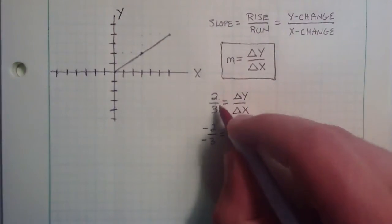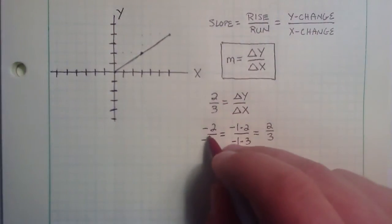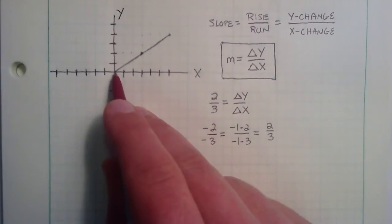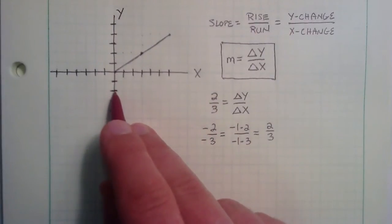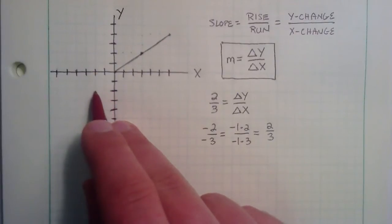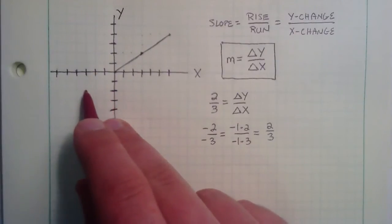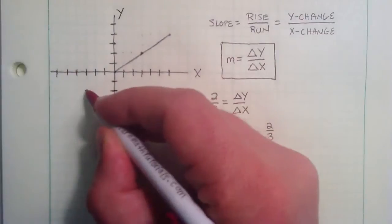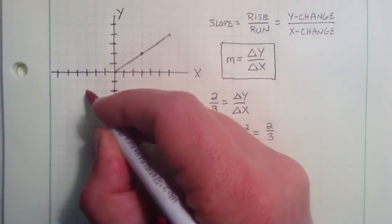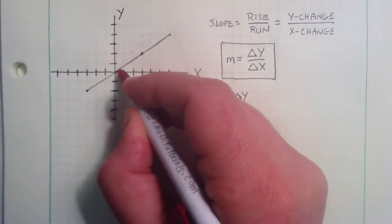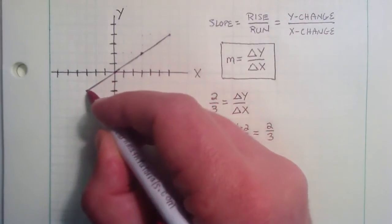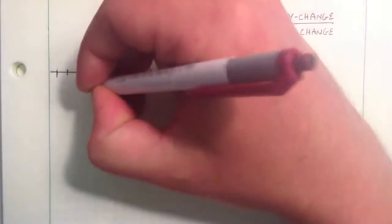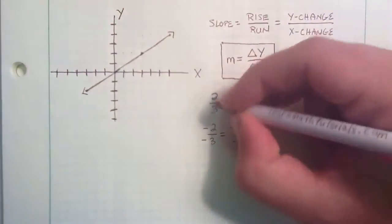So if we think of the slope 2 thirds in this sense, we could start here and count down negative 2 in the y, and then to the left negative 3, and put a point there. That will extend our line in the other direction. So this represents a line with a slope of 2 thirds.